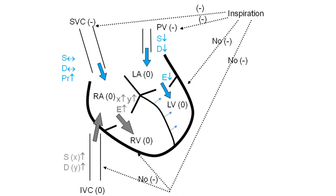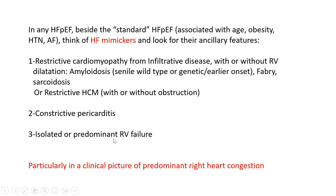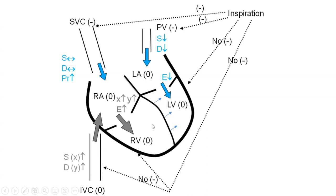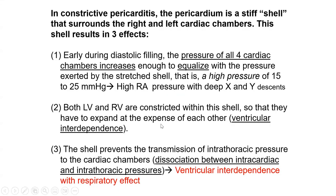So far, what I've described does not distinguish constrictive pericarditis from restriction or isolated right heart failure, because you get those exact findings in the other conditions too. In right heart failure, the dilated RV stretches the pericardium to its point of non-compliance, creating functional constriction and ventricular interdependence. You also have RV-LV interdependence in restrictive cardiomyopathy, particularly with RV dilatation. None of what I mentioned so far is specific to constriction.